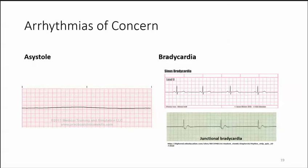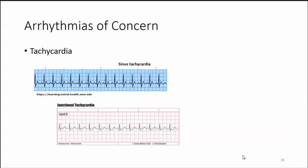Asystole is a complete cessation of electrical activity in the heart. Common causes include large pulmonary embolism, large MI, respiratory arrest, hypoxia, and overdose. Patients may or may not complain of symptoms prior to arrest. Bradycardia is a slow heart rate, less than 60 beats per minute — recognize when vital signs fall outside expected parameters. Responsibilities include notifying the physician, monitoring the patient until care is transferred, and assisting with placing pads on the patient. Tachycardia is a fast heart rate greater than 100 beats per minute, with the same responsibilities as bradycardia.